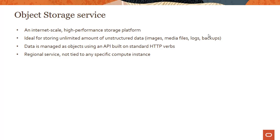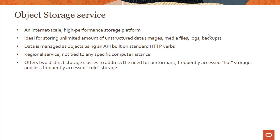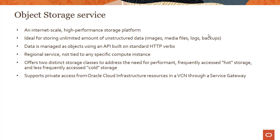Object storage is a regional service and, unlike file storage and block storage, you are not really tying this to compute instances. It's not like you mount a disk and use it to store data and applications for your compute instances. There are two distinct storage classes: one to address the need for frequently accessed hot storage, and another for less frequently accessed cold storage, which is also called archive storage.